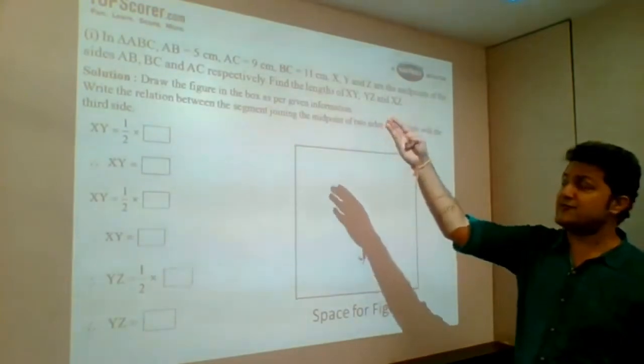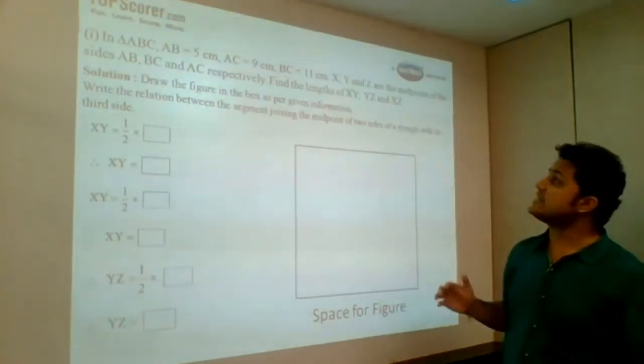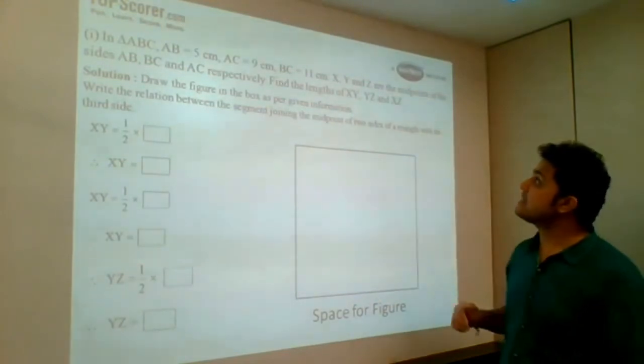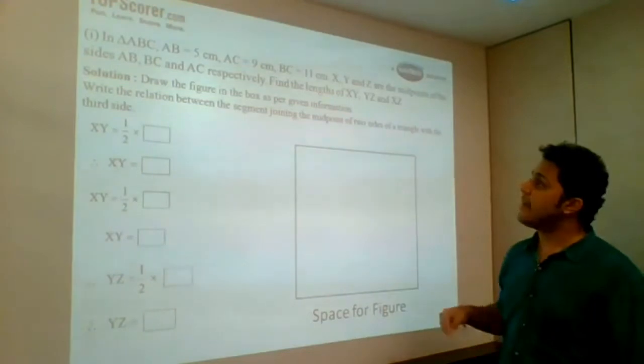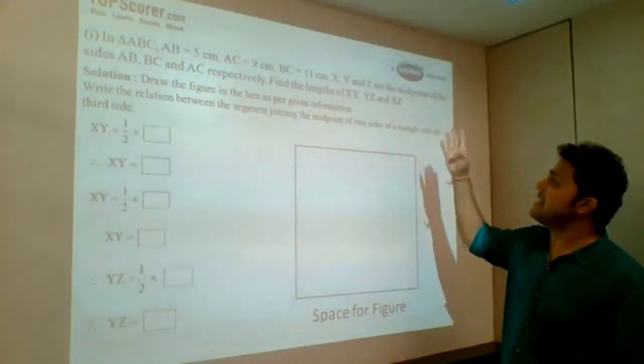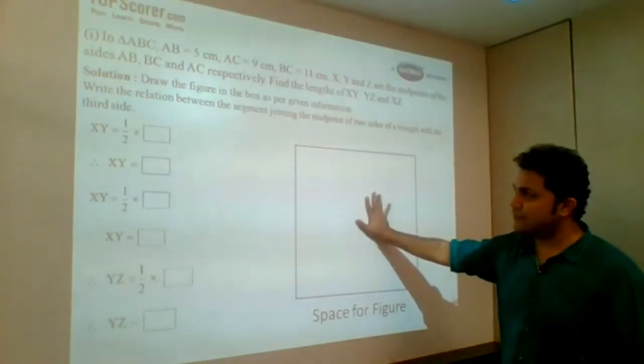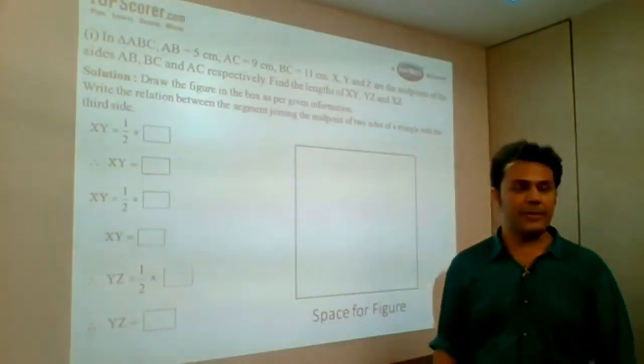Now look upon this question of geometry. In triangle ABC, AB is 5 cm, AC is 9 cm, BC is 11 cm. X, Y, Z are midpoints of sides AB, BC, AC respectively. Find the lengths of XY, YZ and XZ. So accordingly, draw the figure, fill in these boxes. Accordingly, the marks will be distributed. So it's very, very easy when the entire paper is all the more activity-based.